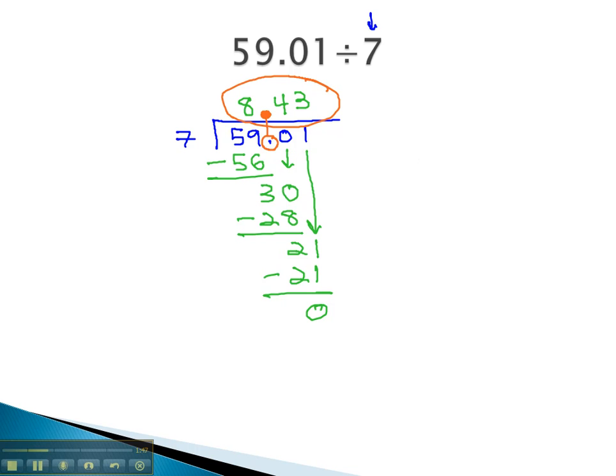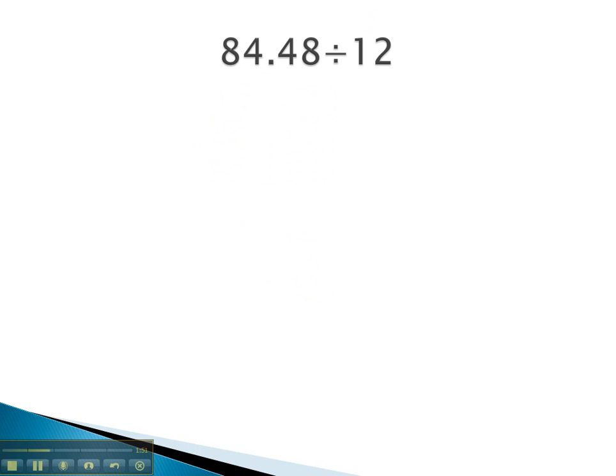Let's take a look at another example, where we go through this same process. Here, we're dividing by the whole number 12. Again, the second number needs to go in front of the long division bar, and we're putting it into 84.48.